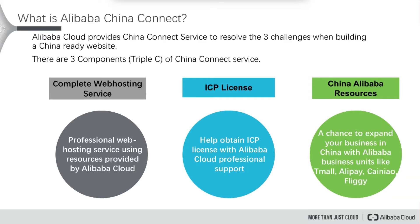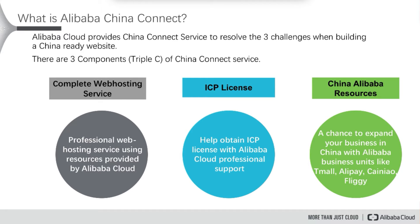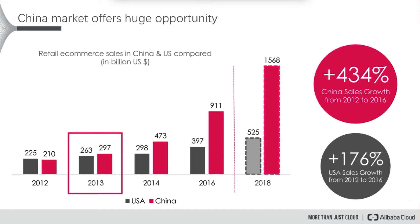The China Connect service aims to help you resolve three challenges when building a China-ready service — for example, a China-ready website, online shop, or app ready to serve customers in China. There are three components: first, Alibaba Cloud provides comprehensive web hosting; second, Alibaba Cloud provides support to get the required ICP license; and third, Alibaba Cloud gives you a chance to partner with companies in the Alibaba ecosystem to help your business grow faster.